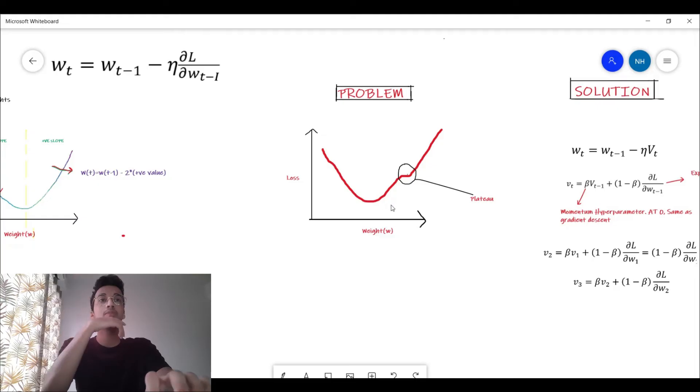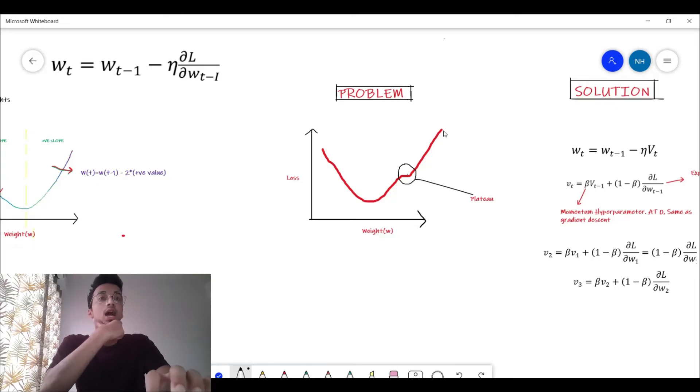Now let's see what the problem can come up when we're using gradient descent. In gradient descent, let's say we start somewhere towards the right hand side and we're taking steps to come down.